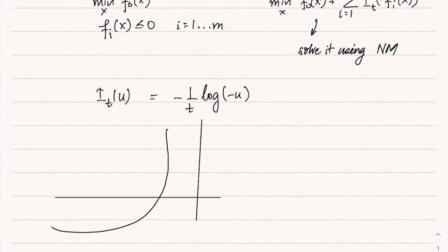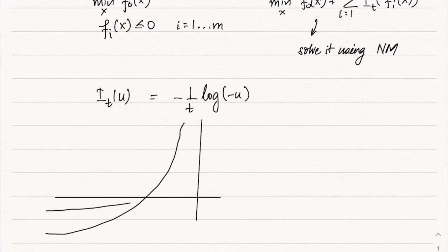The barrier function looks like this for different values of t. You can see that as t increases, the slope of this curve becomes sharper and sharper towards 0. In fact, you can imagine that as t tends to infinity, this becomes the indicator function for negative u, because it is really going to infinity as soon as u touches 0.